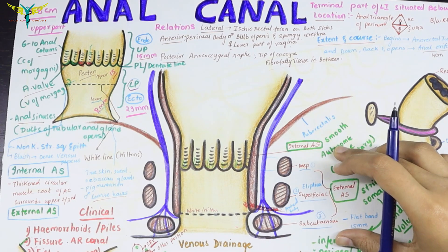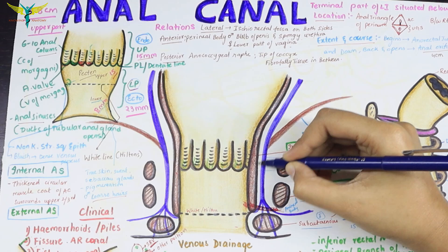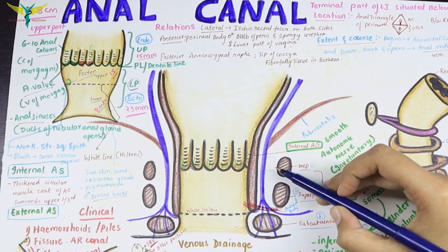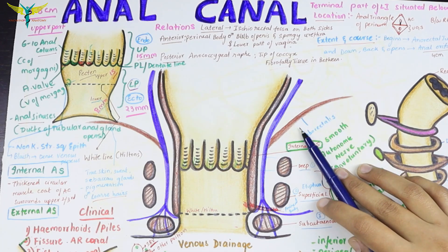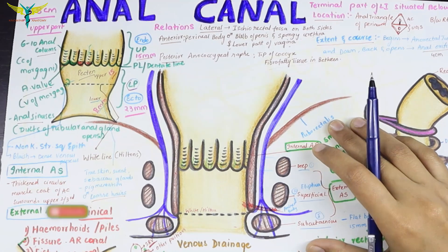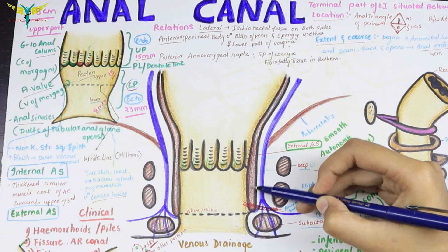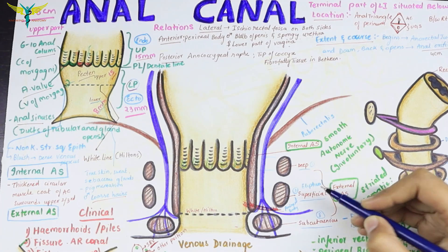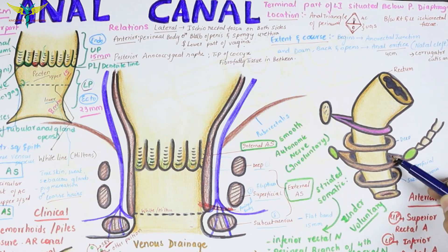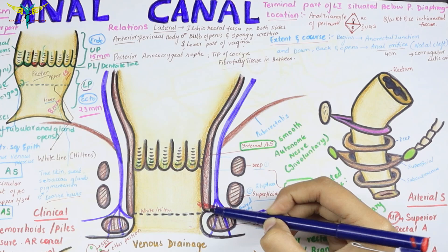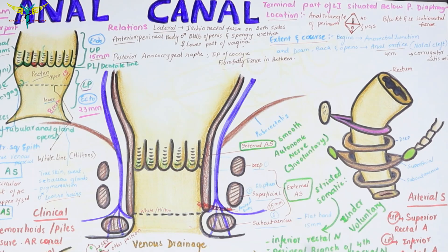The external anal sphincter has three parts: the deep part, the superficial part, and the subcutaneous part. The deep part surrounds the upper part of the internal anal sphincter and is continuous with the puborectal muscle; contraction of this muscle increases the anorectal angle, which is important for the continence mechanism. The superficial part lies at the lower border of the internal anal sphincter, is elliptical in shape, and is attached anteriorly to the perineal body. The subcutaneous part lies below the internal anal sphincter, forms a flat band about 15 mm broad, and has no bony attachment.